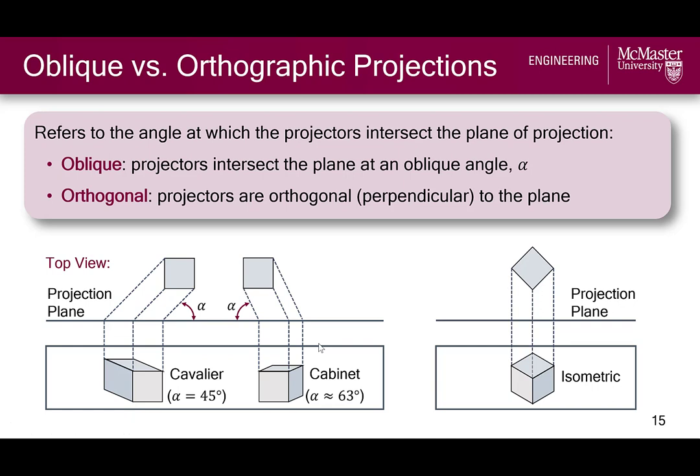And if alpha is about 63 degrees, we end up with a cabinet oblique projection, where the depth dimension is about half of its true length. This is shown in the diagram of oblique projections of a cube — we can imagine viewing the cube from the top, with projection lines bringing the projection down onto the plane to give us our oblique projections below. If the projection lines are exactly perpendicular to the projection plane, then we end up with the orthogonal projection, as exemplified by this isometric pictorial.